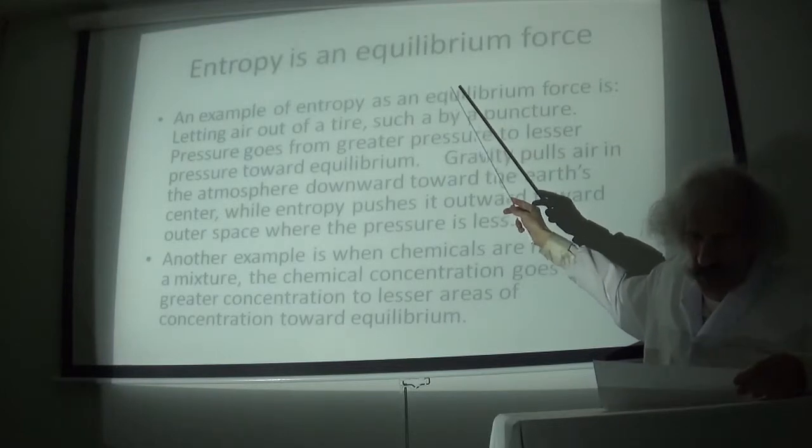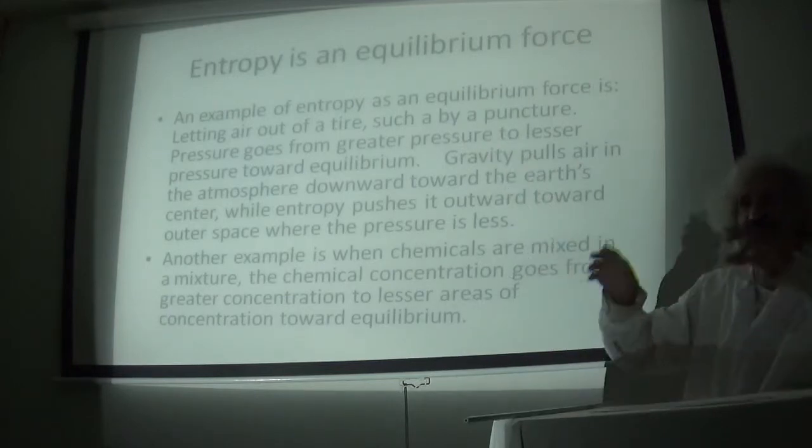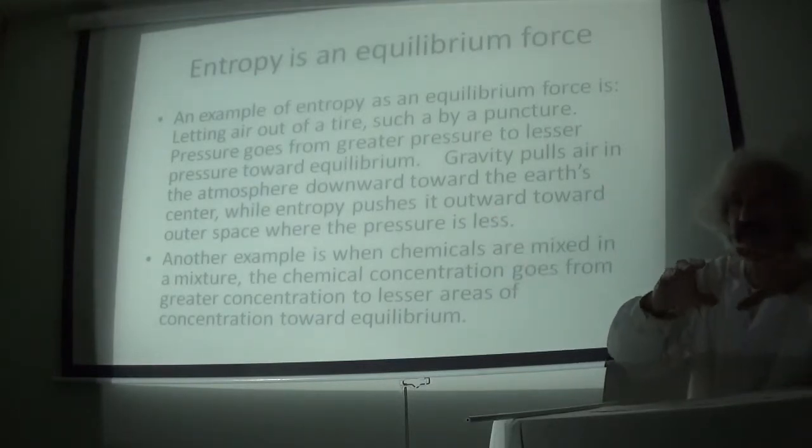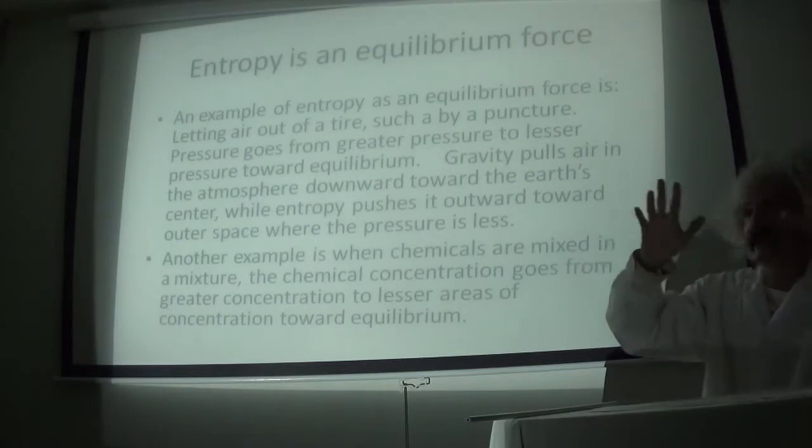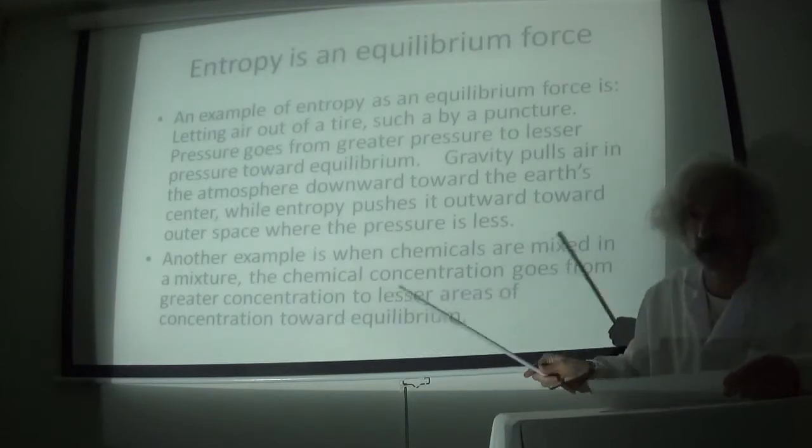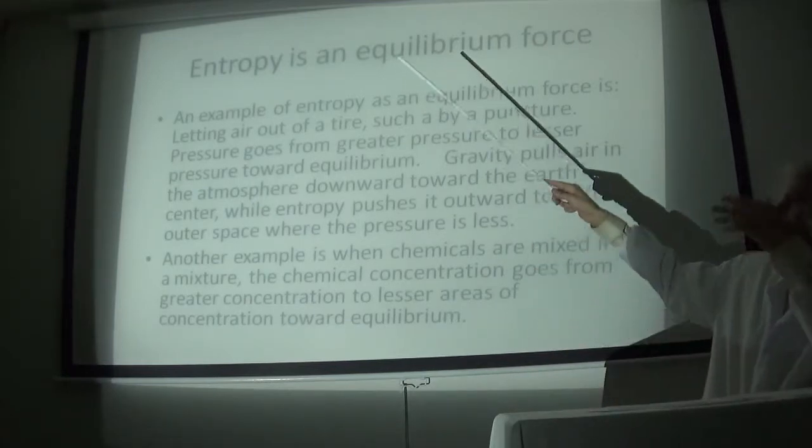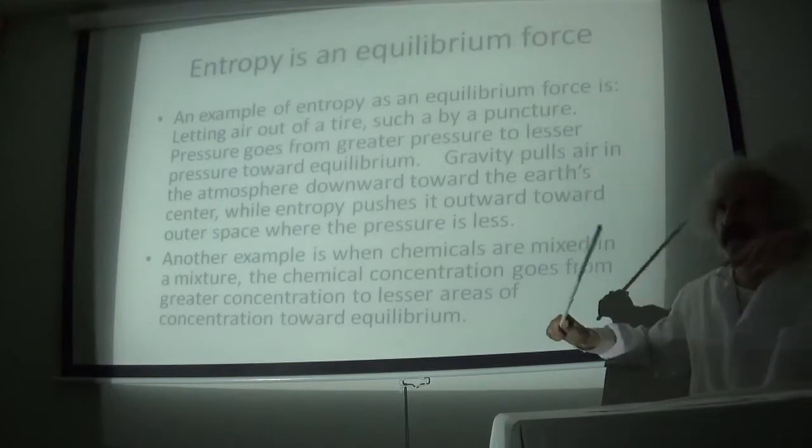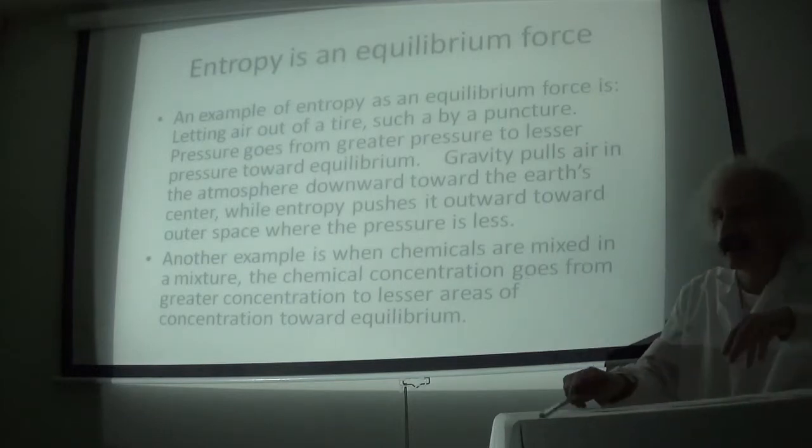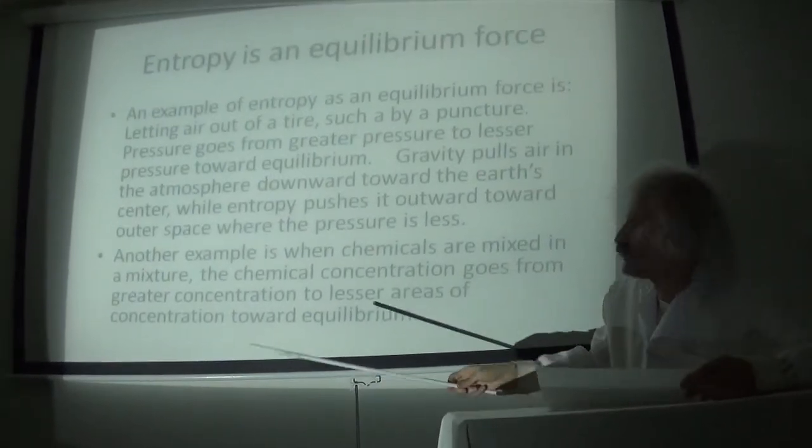Entropy is an equilibrium force. An example of entropy as an equilibrium force is letting air out of a tire, such as by a puncture. The tire pressure is greater inside the tire. It goes to the atmosphere, which is less, until it equalizes and all the pressure comes out, and it's fairly equal in the atmosphere. Gravity pulls air pressure from the upper atmosphere downward from areas of lesser pressure to greater pressure toward the center of the earth, whereas entropy pushes the air outward from greater pressure to lesser pressure in the upper atmosphere.